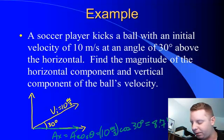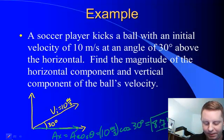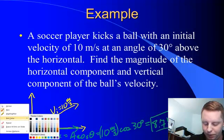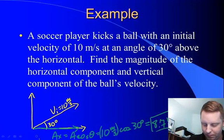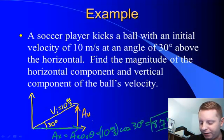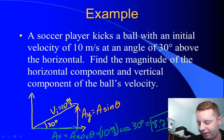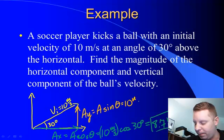Now let's see if we can't find its vertical component. Ay, its vertical component, will be A sin theta. Once again, I substitute in with units, 10 meters per second, sin 30 degrees, or 5 meters per second.